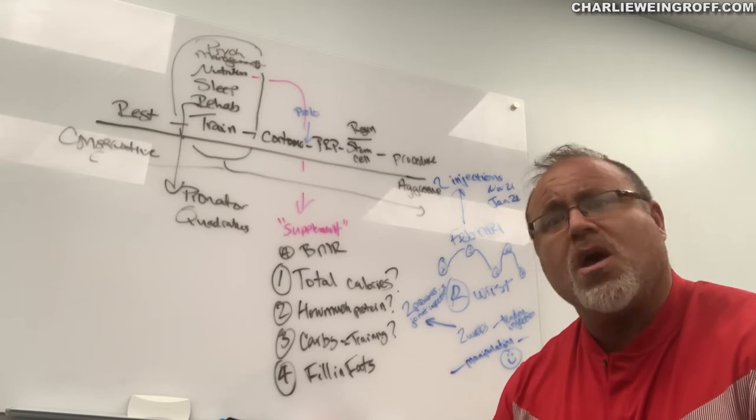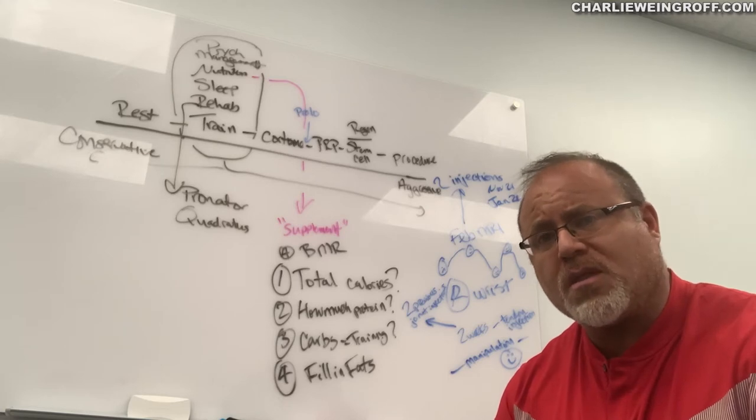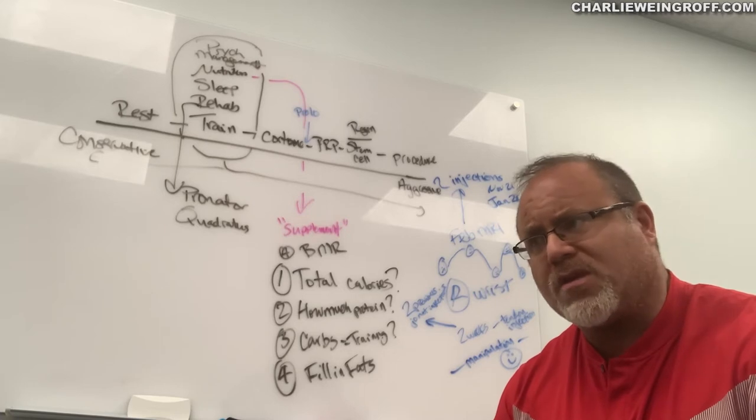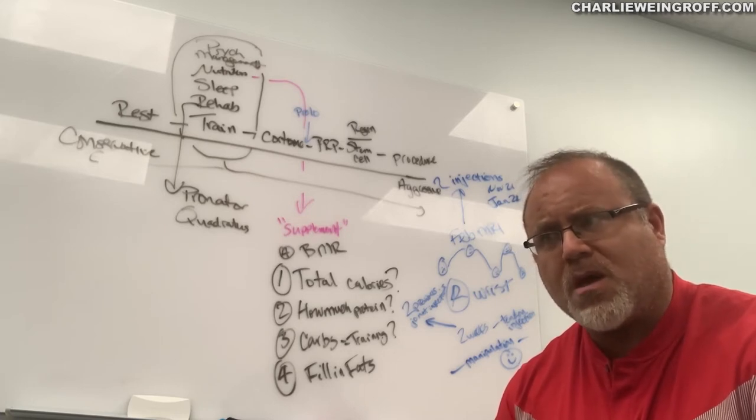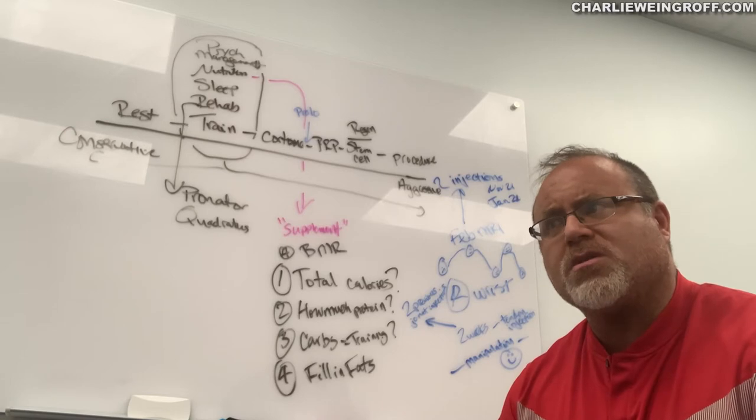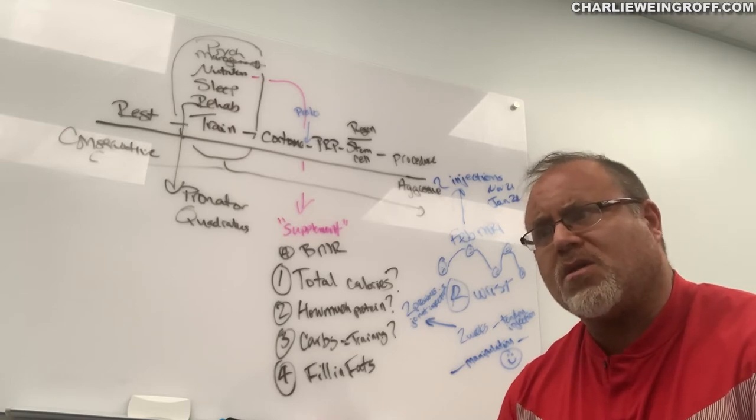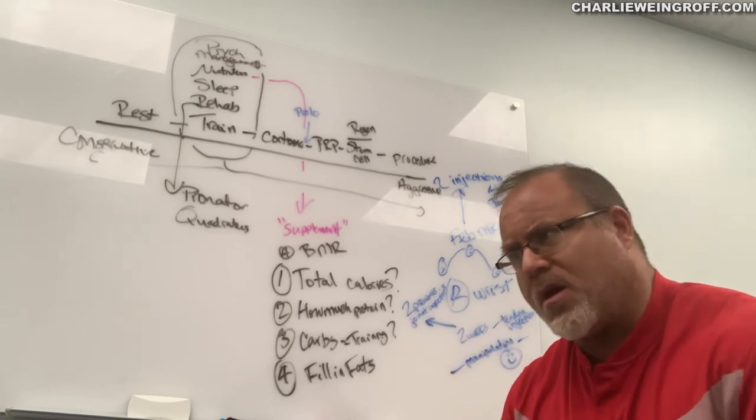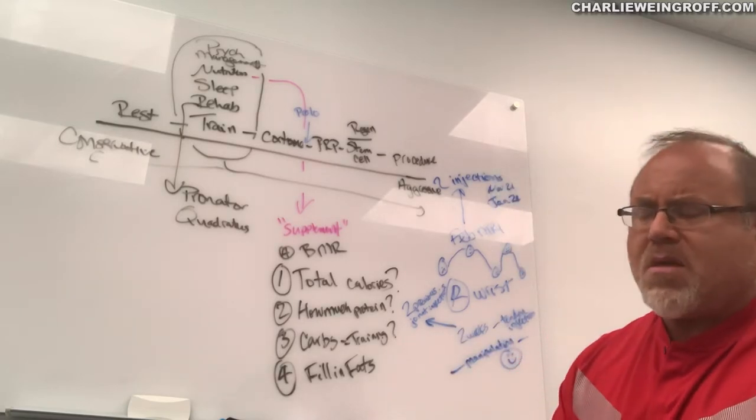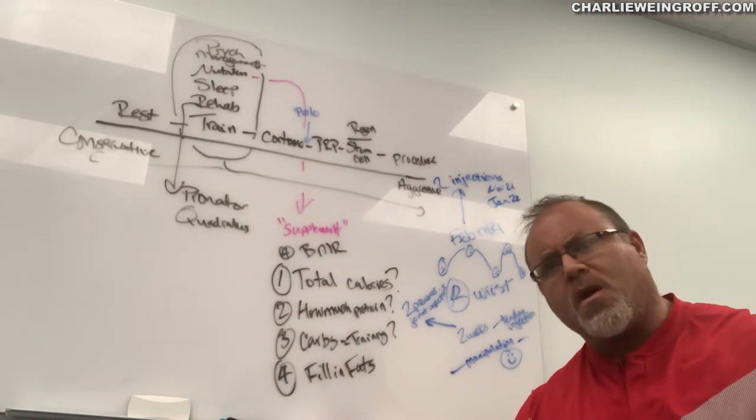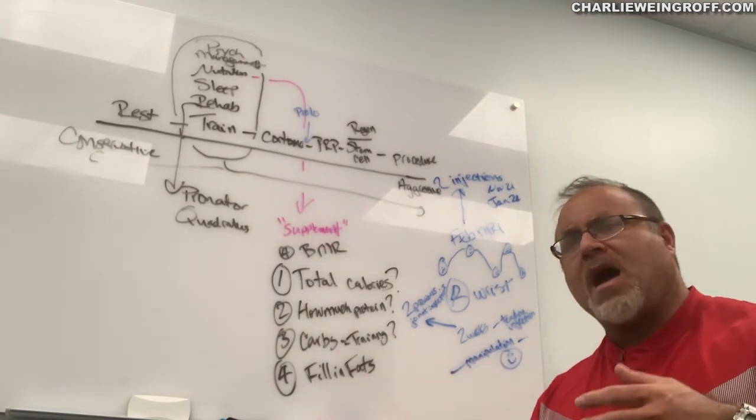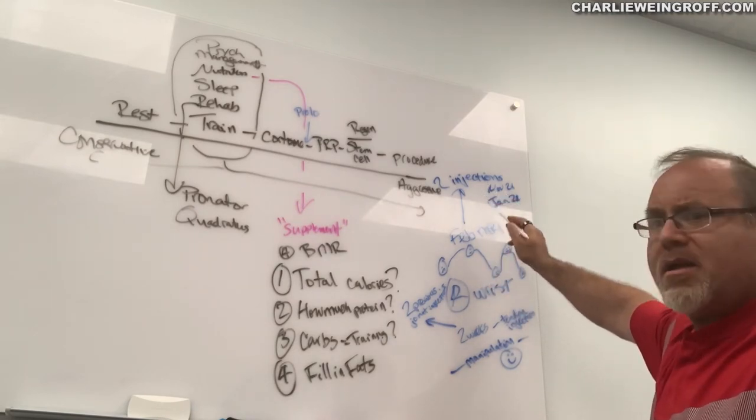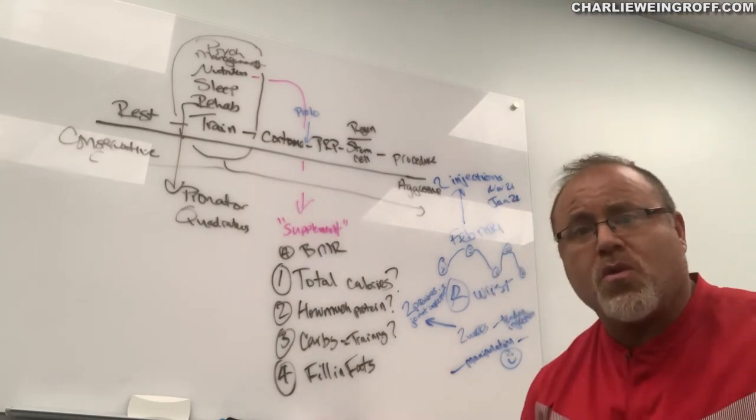One of the best amateur golfers in the state of Florida is considering dropping out of a very significant tournament because of significant pain that appears to be associated with wrist extension. Right-handed golfer, so it's in his right hand. We start to think of some things. He gave me a little bit of a timeline, dating back to November and January, two cortisone injections.